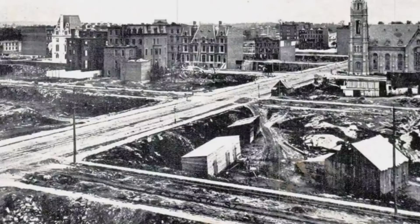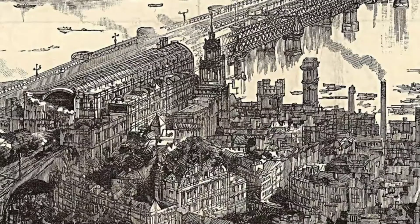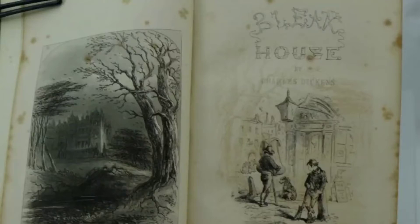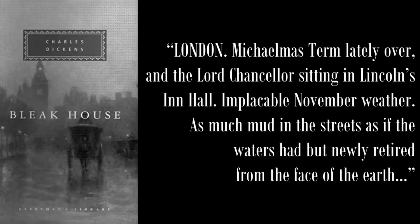Applauded by literary scholars for his use of fog as a simile and metaphor, many often overlook that Charles Dickens's 1852 novel Bleak House actually opens with a different image. "London. Michaelmas term lately over and the Lord Chancellor sitting in Lincoln's Inn Hall. Implacable November weather. As much mud in the streets as if the waters had but newly retired from the face of the earth."